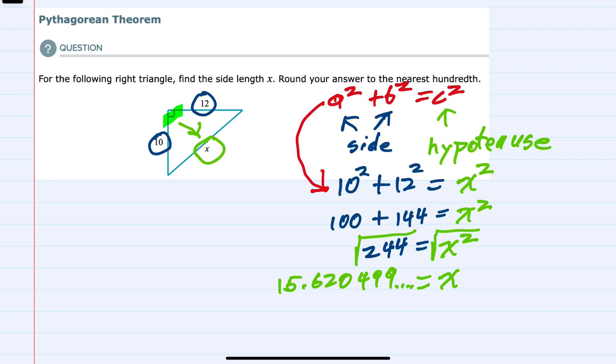But the instructions here say to round our answer to the nearest hundredth. So if I look at the hundredth place in our answer, that would be the 2. I'm supposed to round to that decimal place. In doing so, since the 2 is followed by a 0, I wouldn't round up to a 3. I would leave that as a 2. So to the hundredth place, we would have 15.62.